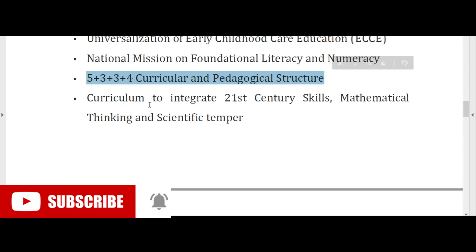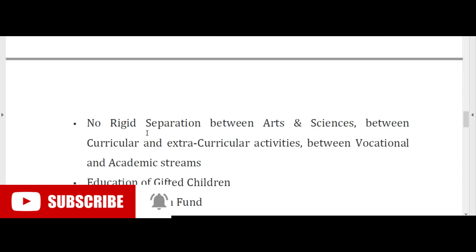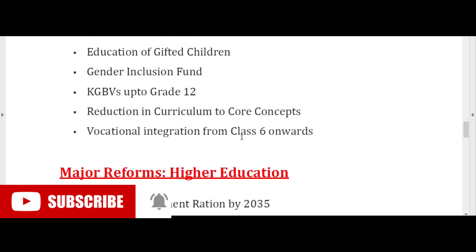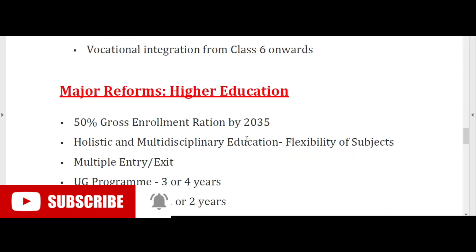Curriculum to integrate 21st century skills, mathematical thinking, and scientific temper. No rigid separation between arts and sciences, between curricular and extracurricular activities, or between vocational and academic streams. Special focus on education of gifted children and a gender inclusion fund. Education from elementary through to higher education, targeting 50% Gross Enrollment Ratio (GER) in higher education by 2035.